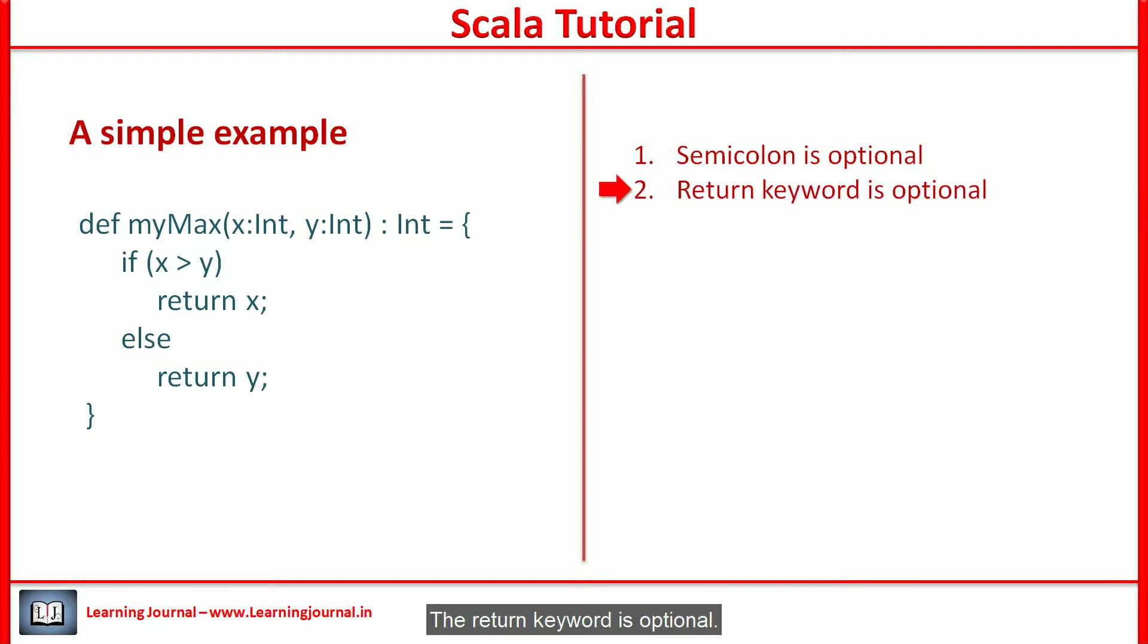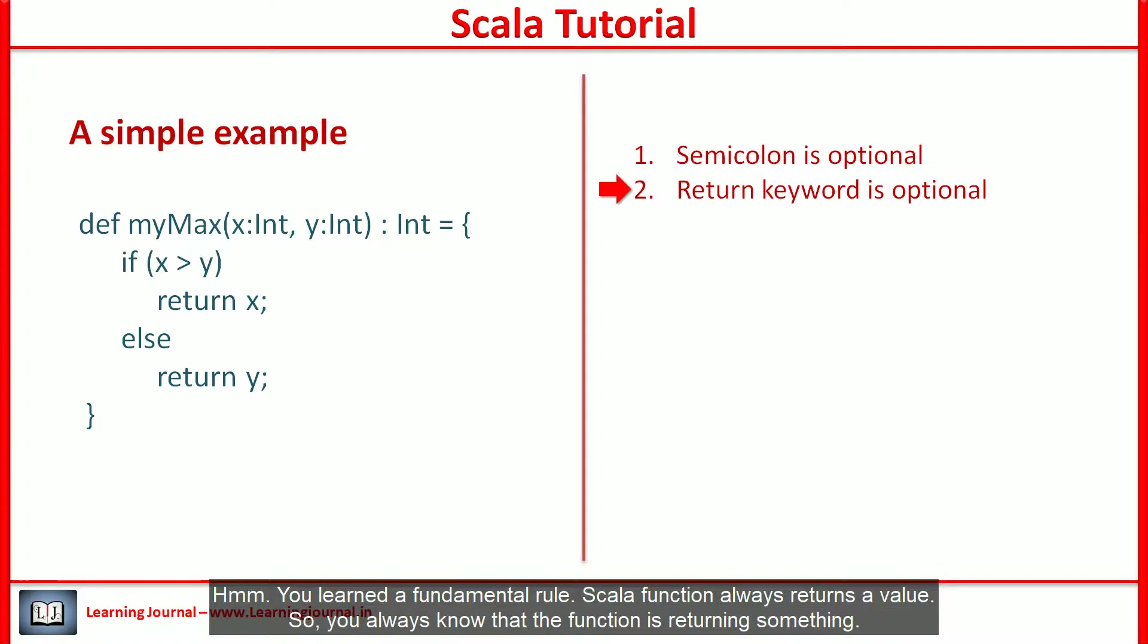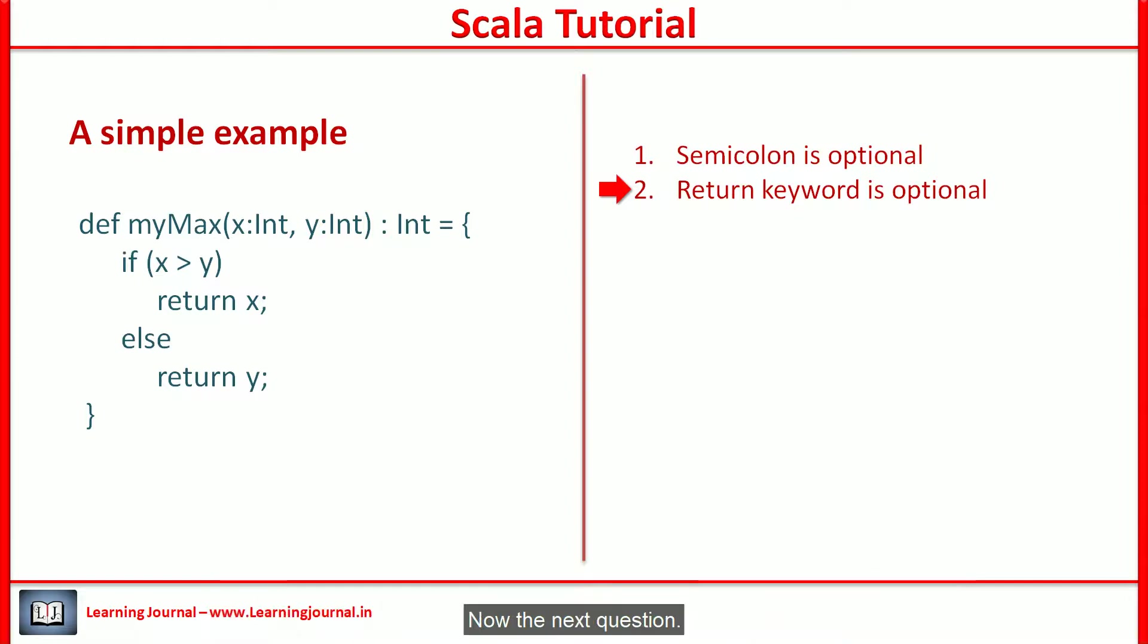The return key is optional. That's a big problem. How do I know that a function is returning something? And there are many lines of code. Which line will return a value? You learned a fundamental rule. Scala function always returns a value. So, you always know that a function is returning something.